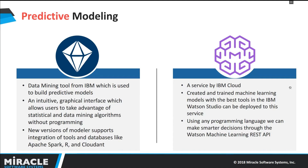IBM SPSS Modeler is an IBM tool used to build predictive models using statistical and data mining algorithms without any prior programming knowledge. We can do data analysis, manipulations, and transformations very easily with this tool. We can also integrate tools like R and Apache Spark, and databases like Cloudant to the streams we develop. It has a drag-and-drop functionality to create predictive models. IBM Watson Machine Learning Service is an IBM Cloud Service where we can deploy our predictive models and access them using a REST API with any programming language.